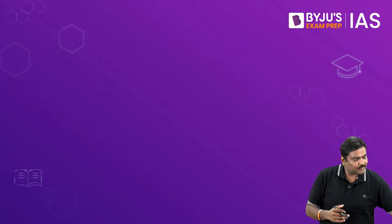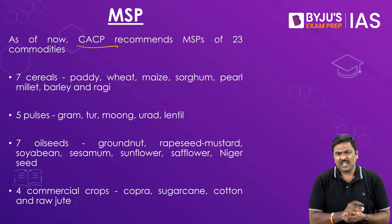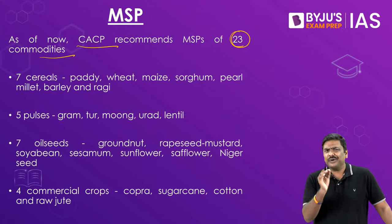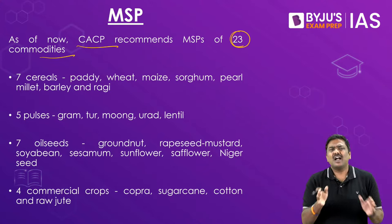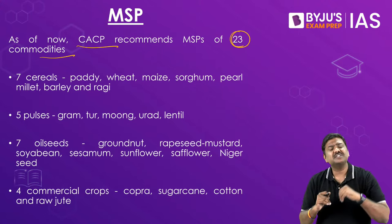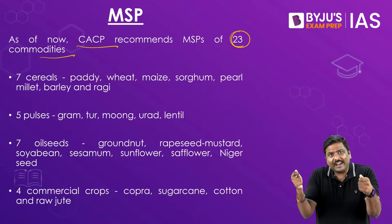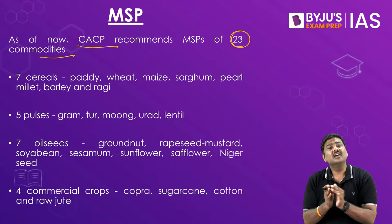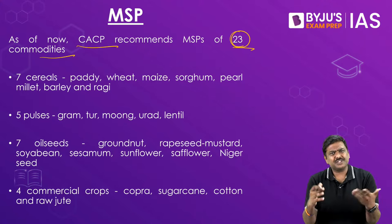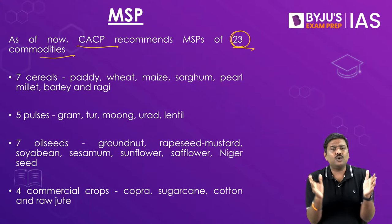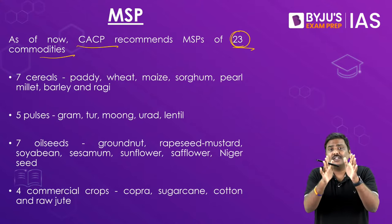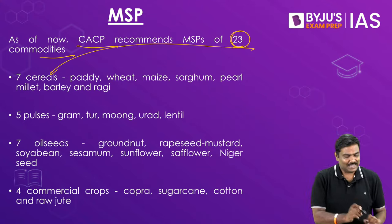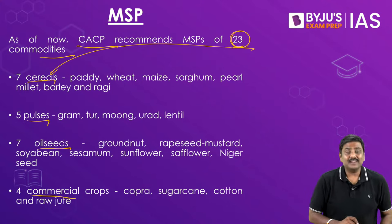As per the CACP website, there are 23 crops for which MSP is announced. Some sources may say 24, but stick with 23 as per CACP, which is a government-owned entity. It is up to the Government of India to either include or exclude crops from this list. These 23 crops can be divided into four groups: cereals, pulses, oilseeds, and commercial crops.